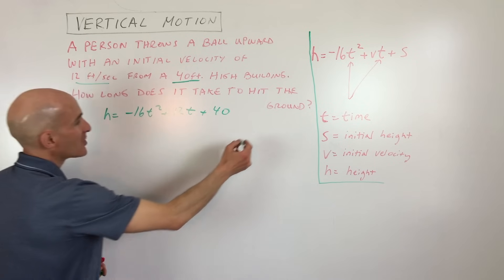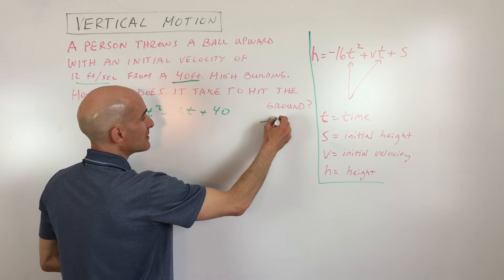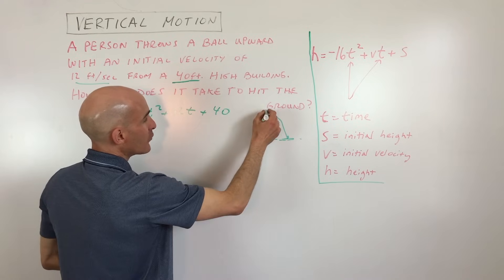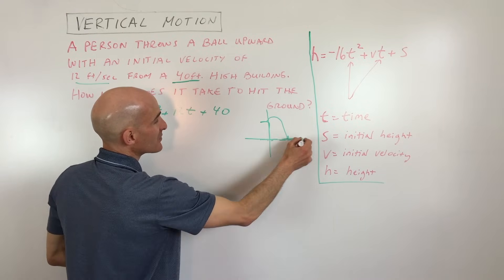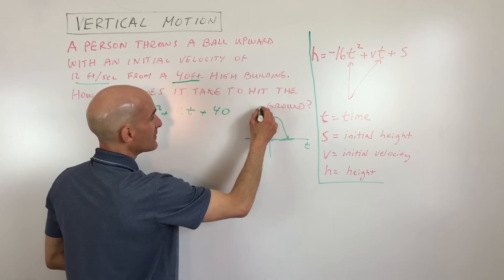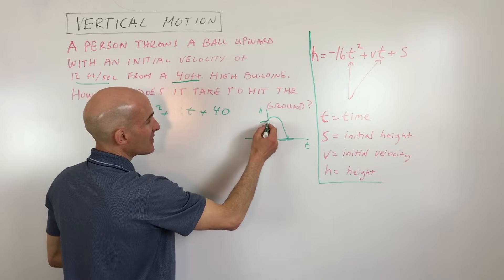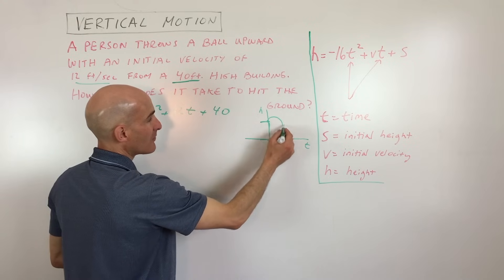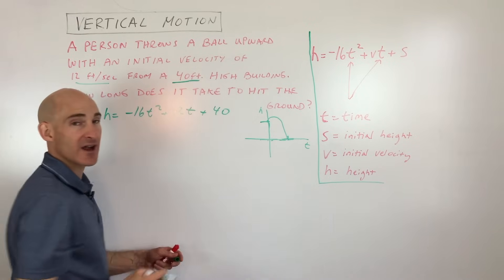Now, if you can kind of visualize this, here's the building. The ball is going to look like that and we're trying to figure out where it hits the ground. If we want to draw this on an axis, it'll look something like this. Here's time and here's the height. And basically what's happening is as time is passing, the ball is going up and it's coming back down and we're looking for where the height is going to be zero.